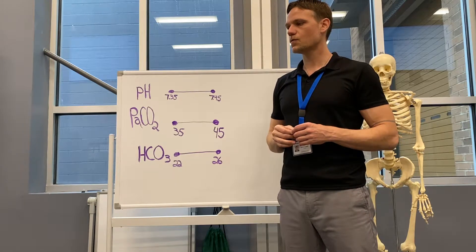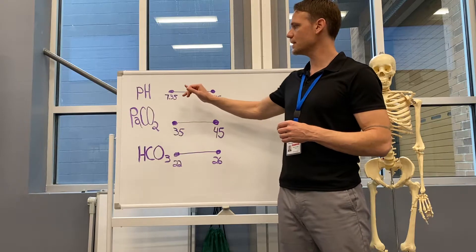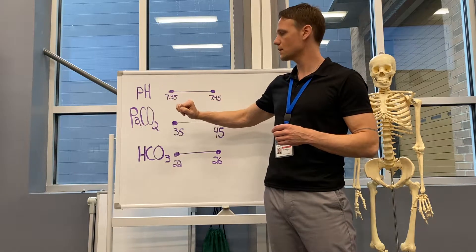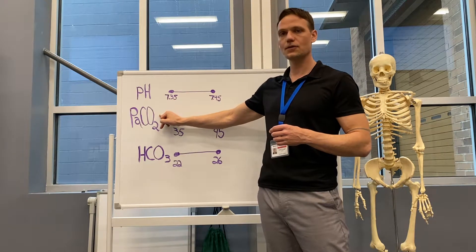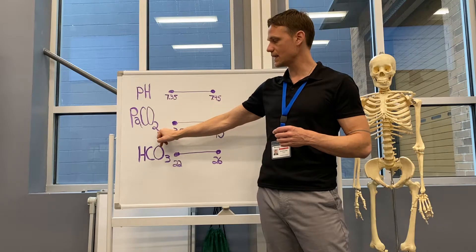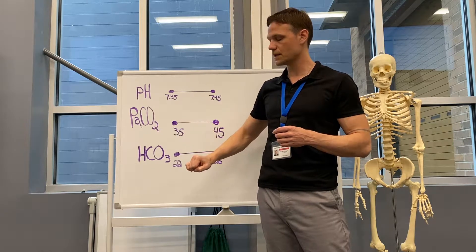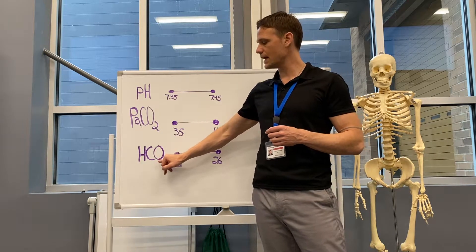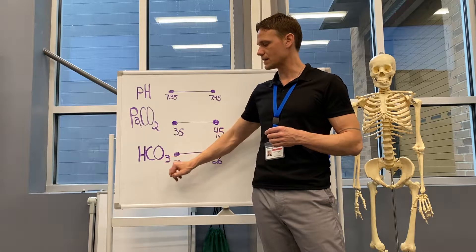So when interpreting ABGs, you look at the pH first, the PaCO2 second, and then the HCO3 lastly.